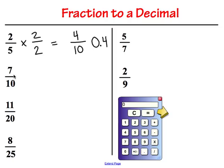Let's try the next one: 7 tenths. For this one, we don't even need to multiply by anything because the denominator is already a 10. We're just going to say this fraction — 7 tenths — which is written as 0.7 in the tenths place.